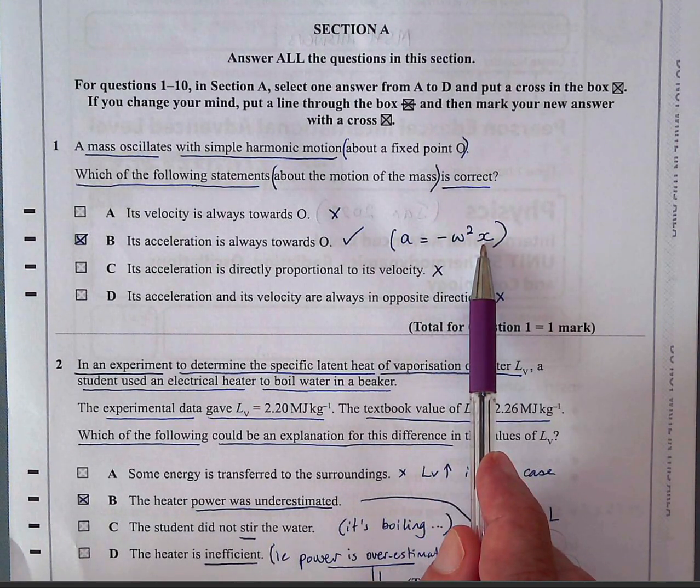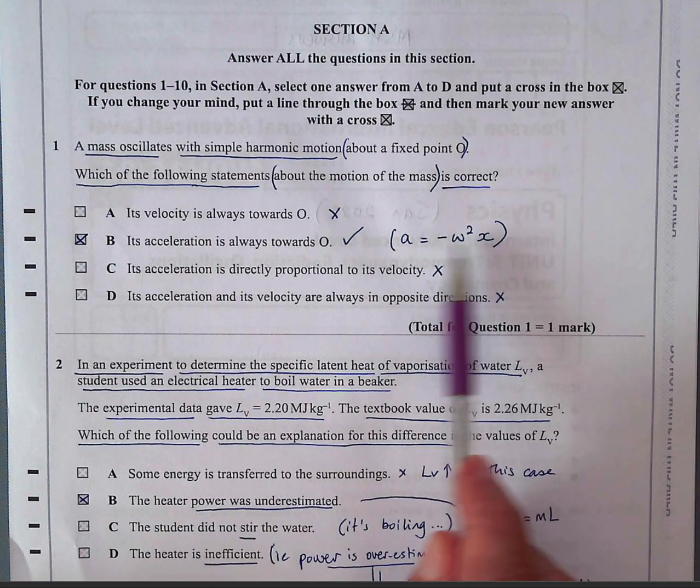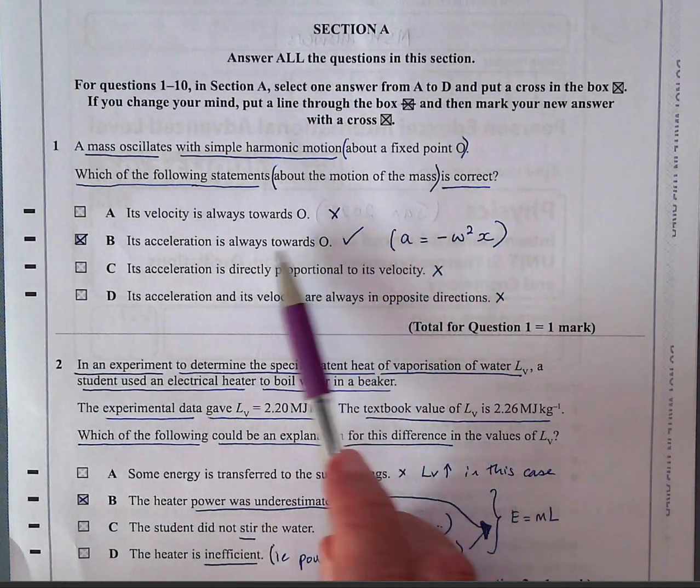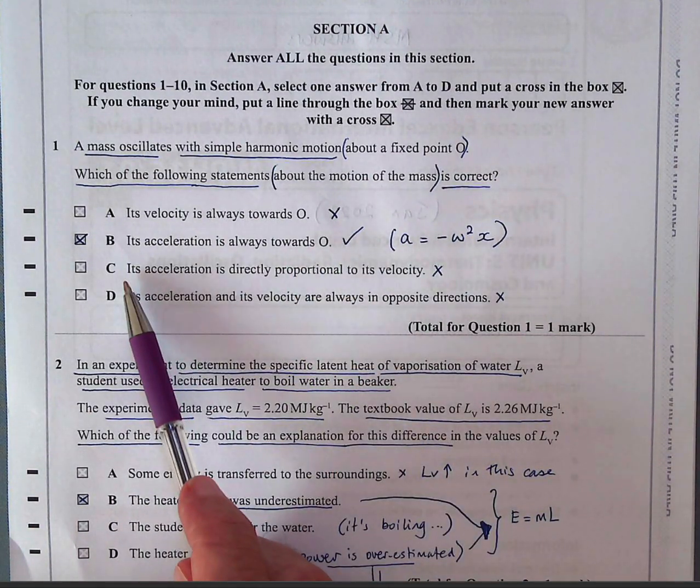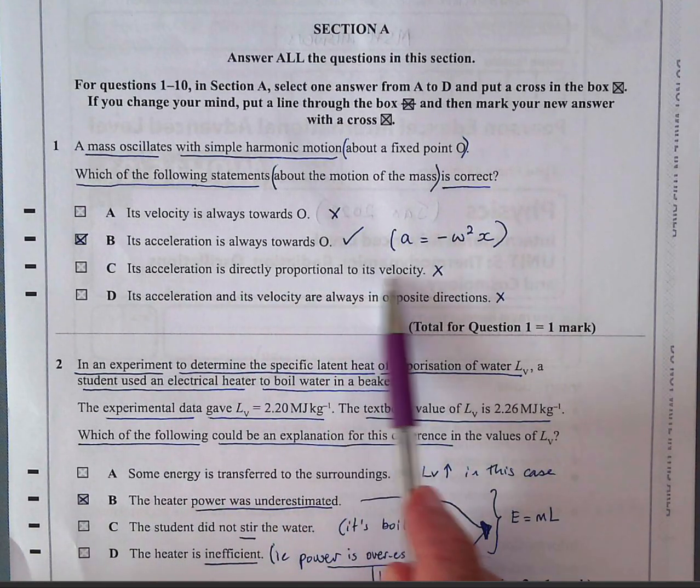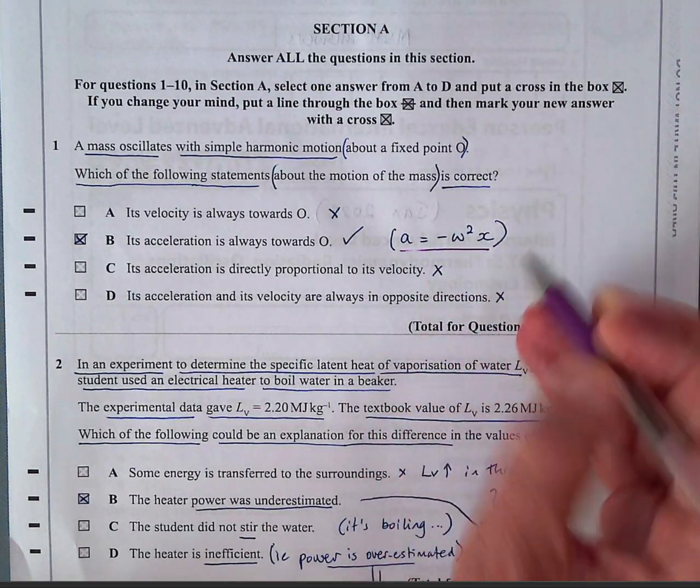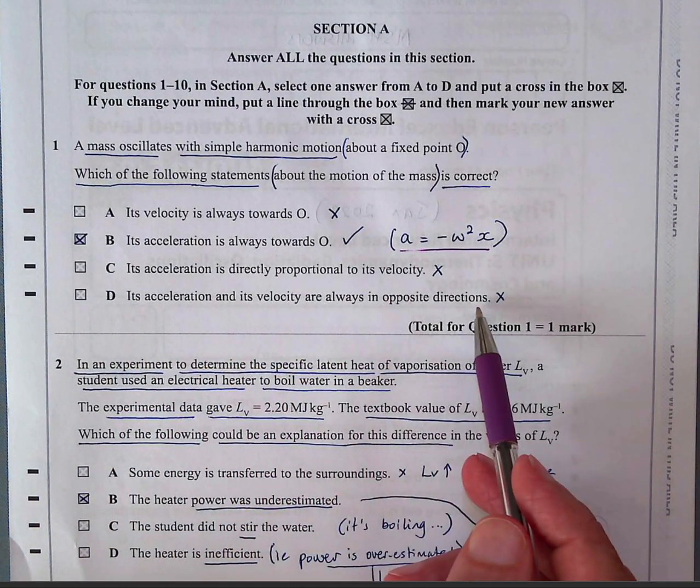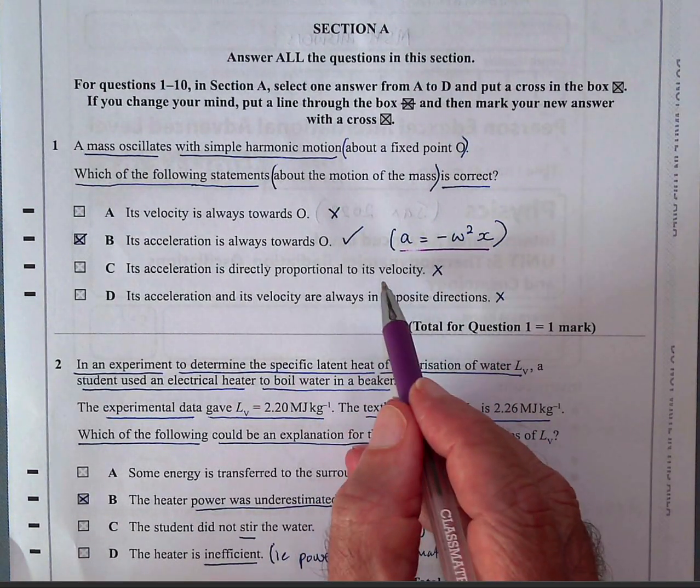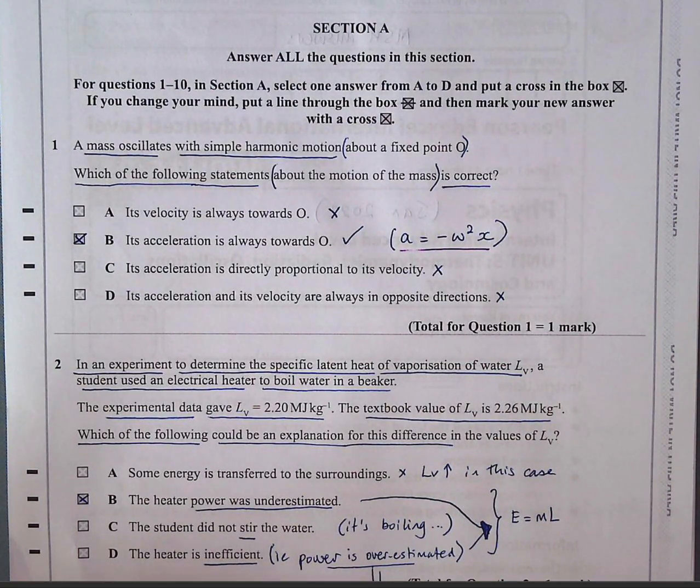If you displace it to the left, the acceleration will then be, if the displacement to the left is counted as negative, the acceleration will be positive. So the acceleration is always towards the centre of the oscillation because if you displace it, there's a restoring force which tries to put it back to equilibrium. C, its acceleration is directly proportional to its velocity? No. As we can see from this equation, the acceleration is directly proportional to displacement which is X. And D says acceleration and velocity are always in opposite directions. No. If they change the word velocity for displacement which is X, that would be true. So C and D are not correct.